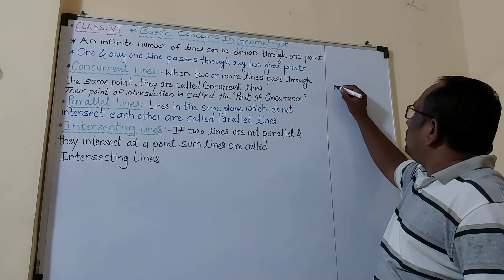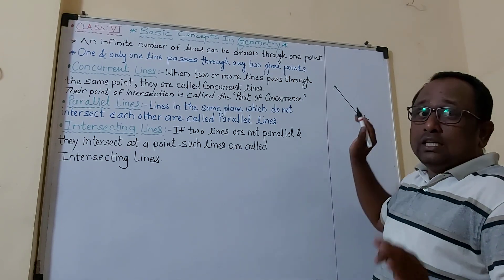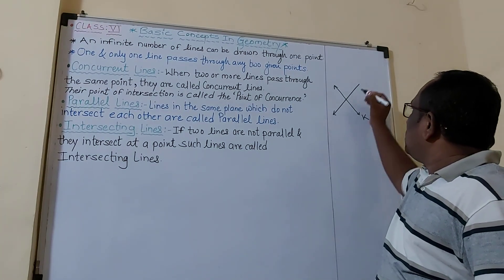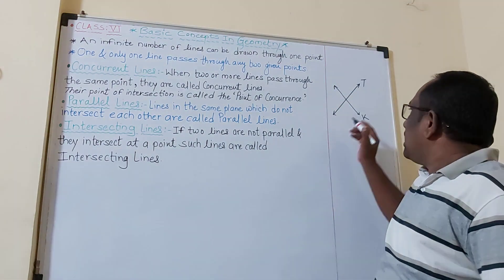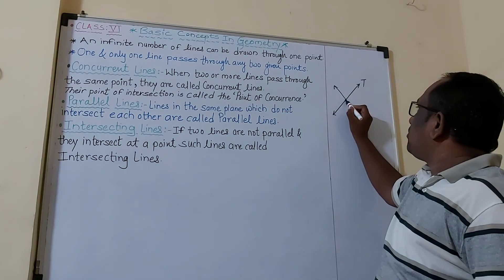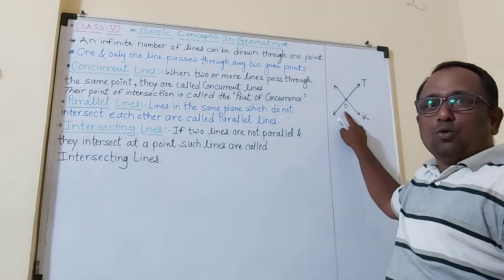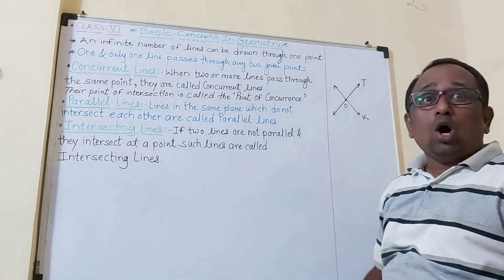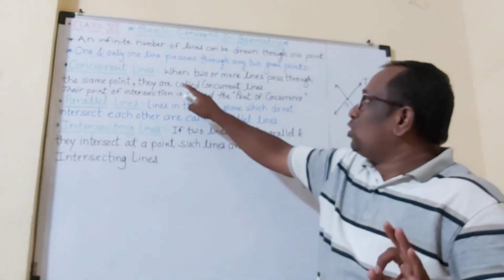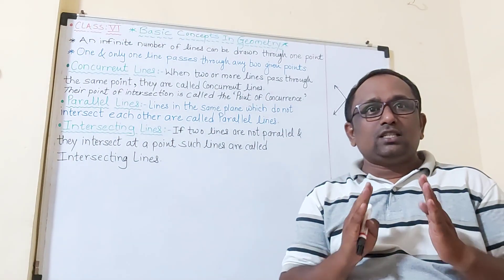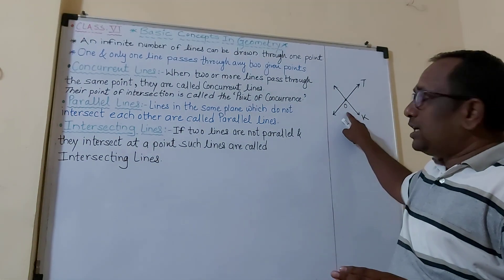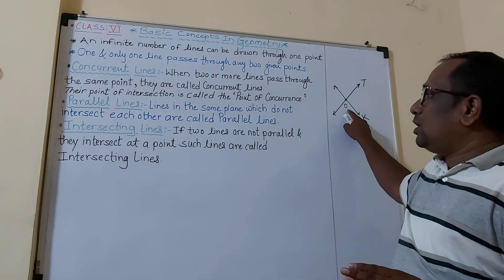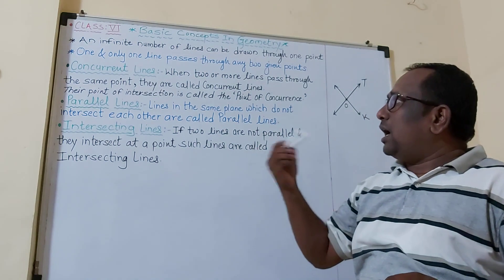For example, look here — this is line K. These two lines are not parallel. I draw another line T. So lines K and T are not parallel and they intersect at a point, which we name O. So line T and line K intersect at point O. Point O is called the point of intersection. In concurrent lines we learned 'point of concurrence'; in intersecting lines the meeting point is called the point of intersection.